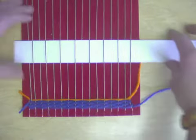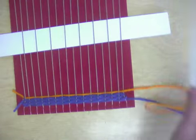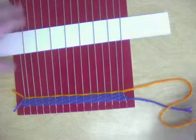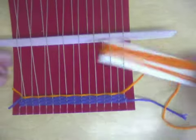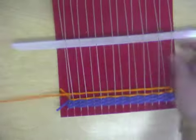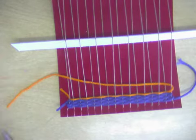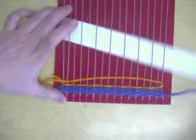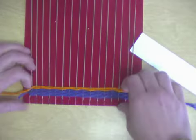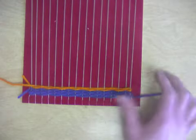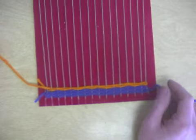Continue weaving your project until you've finished. Once you're done, cut your extra off your shuttle, leaving a tail. Lower your stick and push it down to the bottom.